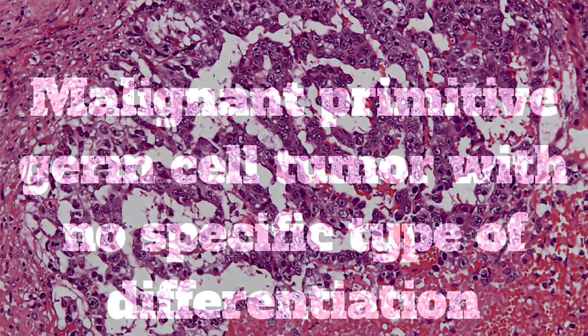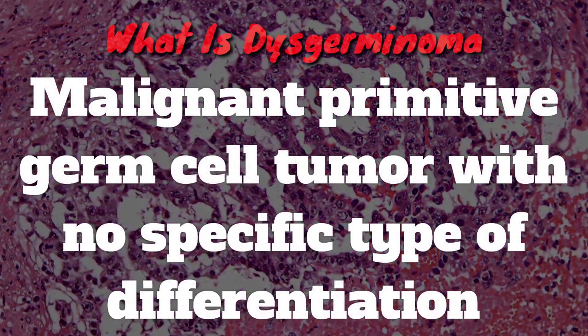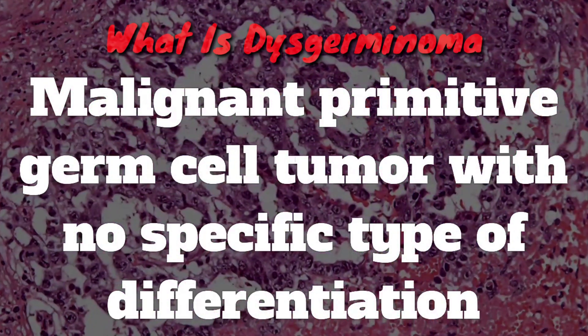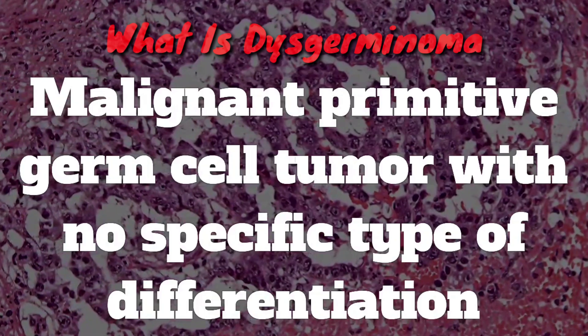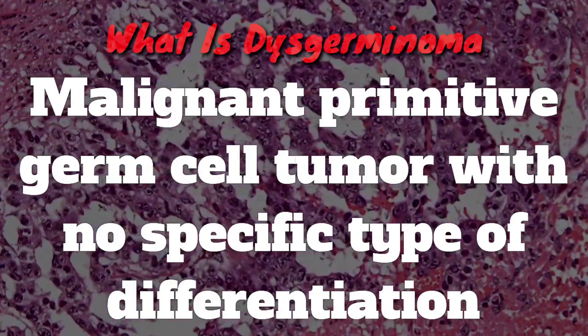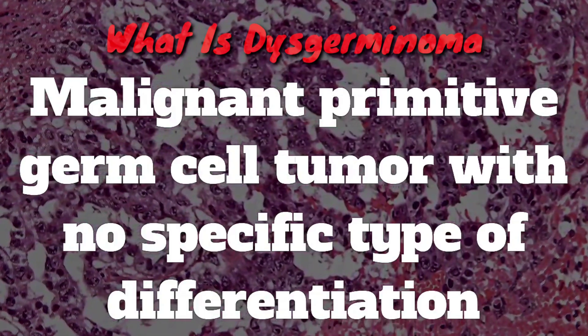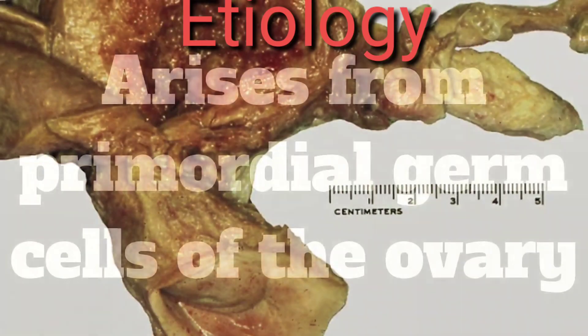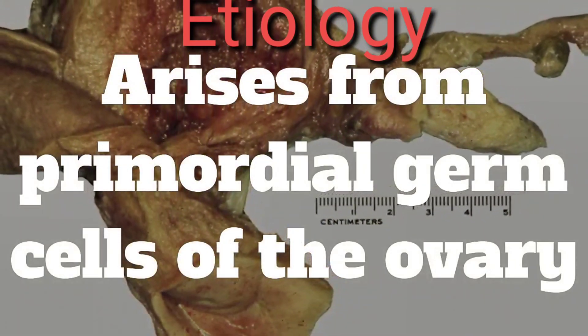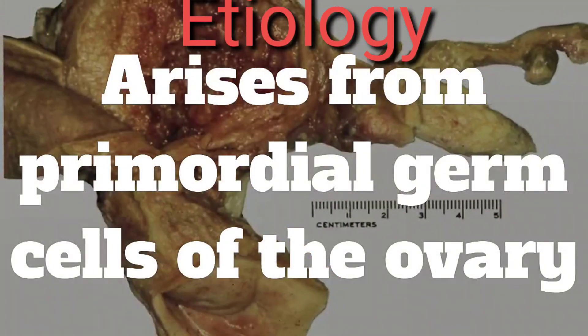Hello everyone, welcome to today's session. Today I am here with the contents of dysgerminoma. What is dysgerminoma? It is the malignant primitive germ cell tumor with no specific type of differentiation. Its etiology: it arises from primordial germ cells of the ovaries.